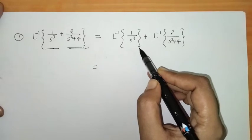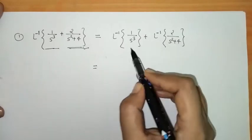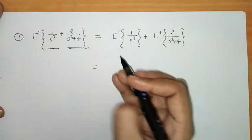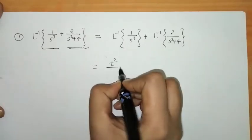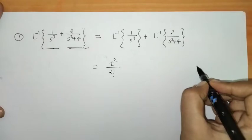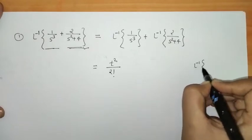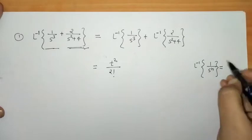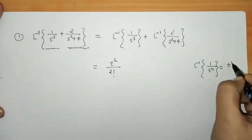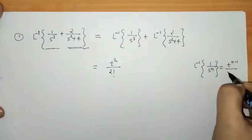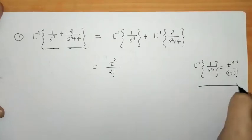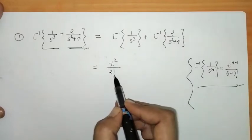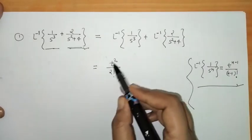From the last lecture on elementary inverse Laplace transforms, L⁻¹{1/sⁿ} = tⁿ⁻¹/(n−1)!. Using this standard result, L⁻¹{1/s³} = t²/2!.